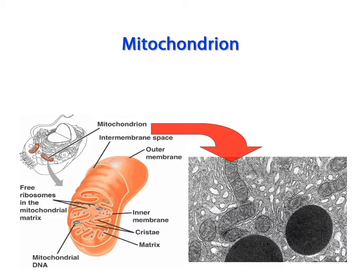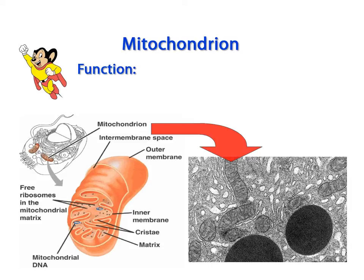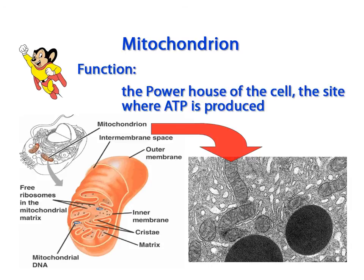One of those metabolic pathways occurs in an organelle called the mitochondria. My memory cue for this organelle is Mighty Mouse, because he is powerful, and the mitochondria is the powerhouse of the cell.